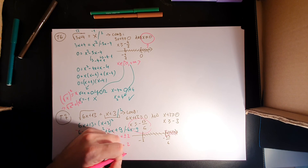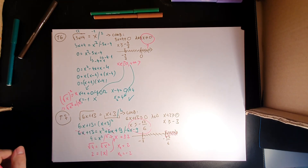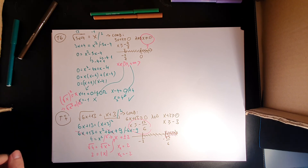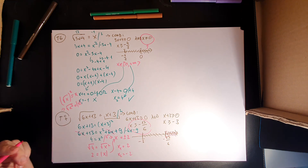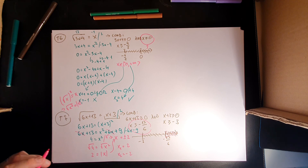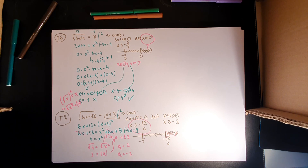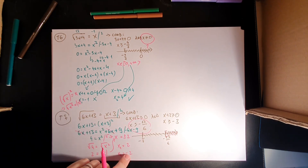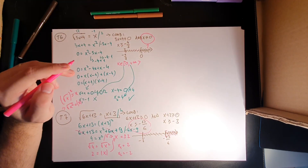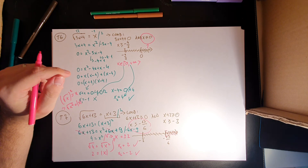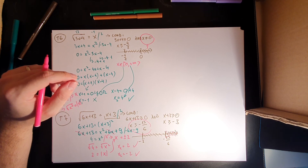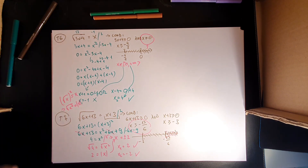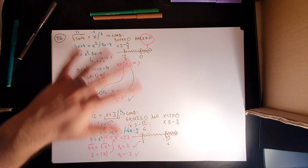Now let's check both solutions against the main condition x greater or equal to minus 13 over 6. The value 2 is clearly greater than minus 13 over 6. And minus 2 is also greater than minus 13 over 6, because minus 13 over 6 is approximately minus 2 point something, which is less than minus 2. So both solutions are valid. That's the end of part 2 — if you have any questions, you know where to ask. See you in school soon, bye-bye.